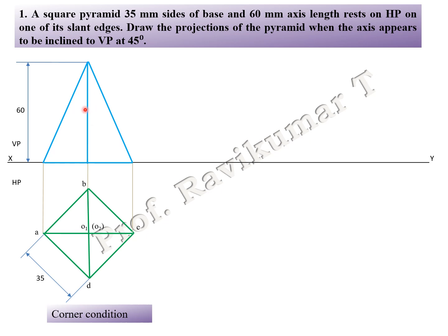Next, do the naming. A is visible, D is visible, but B is invisible. You can see A dash, D dash, and in bracket B dash. Next, O2 dash is the apex, C dash, and here is O1 dash. This completes the first position.